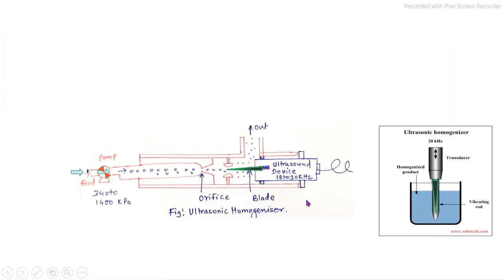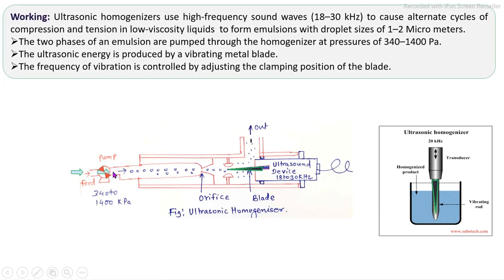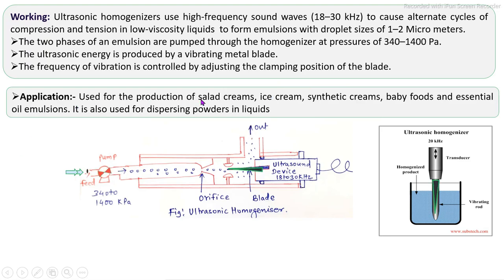In the industrial ultrasonic homogenizer, liquid food product is continuously fed using a high pressure pump into the ultrasonic homogenizer. There is an orifice that reduces the cross-sectional area to create high shearing and turbulence effects. The transducer generates sound waves, and the blade vibrates at high speed. When material is fed through the orifice, high shearing, turbulence, and cavitation occur, causing size reduction. The ultrasonic homogenizer is mostly used for low to medium viscosity liquids.